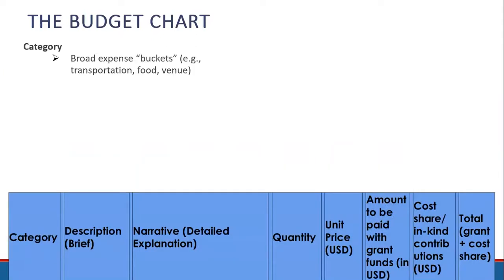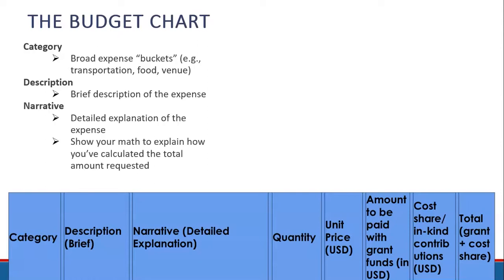Category: these are your broad expense buckets, such as transportation, food, or venue. Description: a brief description of the expense. Narrative: a more detailed explanation of the expense. This is also the place you want to show your math to explain how you've calculated the total amount requested.